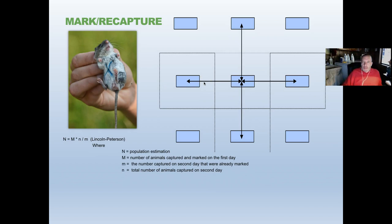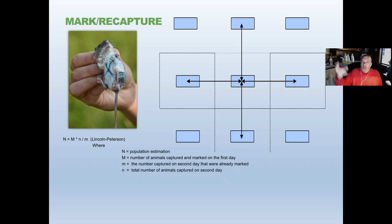Remember, the number we get is just an index — a relative number that we compare from one year into the future. We never know exactly how many animals there are; we only have an index relative from one year to the next.